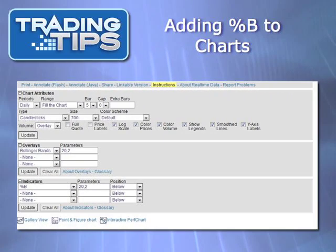You can easily add Bollinger Band Percentage B to your charts on StockCharts.com. Simply select Percentage B from the Indicator's drop-down menu. We recommend using the default parameters — 20, 2 — as these correlate to the standards for Bollinger Bands. We also recommend putting Percentage B below your chart for easy reading.